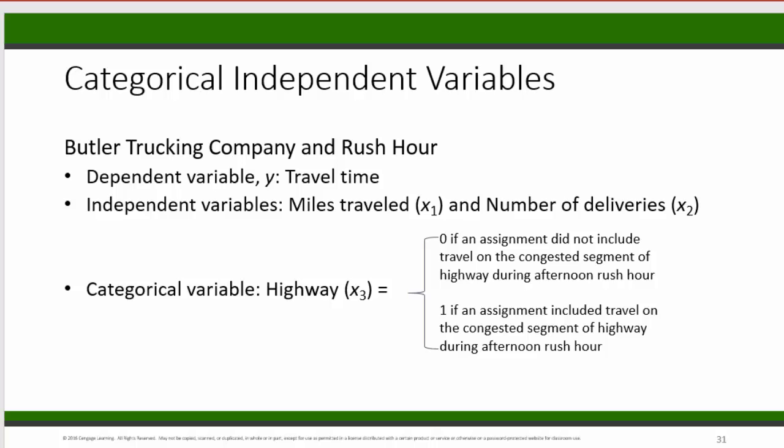Here we call it variable highway. A dummy variable is a variable that takes on the value of 1 or 0 that is created to represent some category. Here, a value of 1 means a yes to having to travel on a congested highway, and 0 means no. A dummy variable whose value is either 1 or 0 can be treated as a quantitative variable, so it can be included in a regression model.